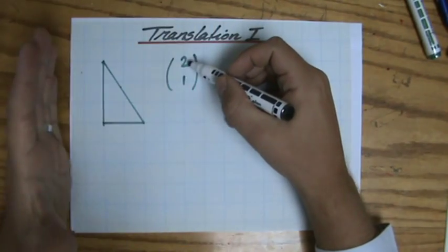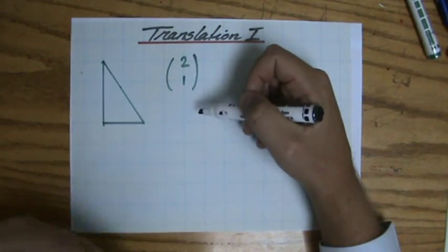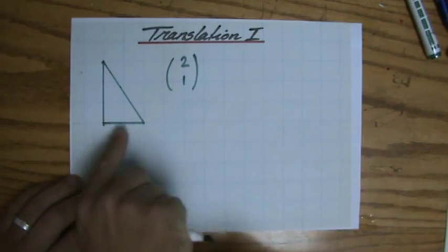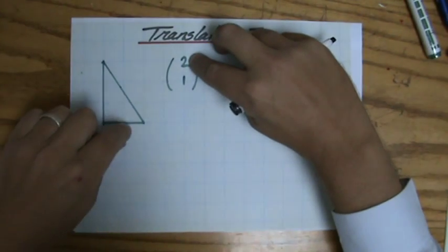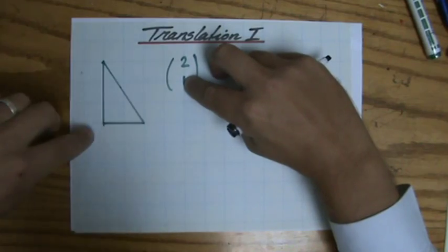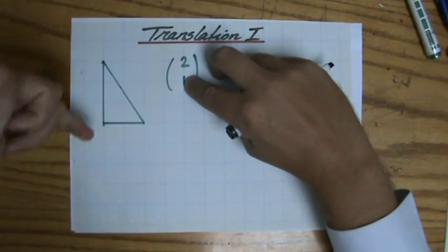translation, and that bottom number is your vertical translation, where positive means to the right—if it were negative, it would be to the left. Positive is up; if it were negative, you would go down.